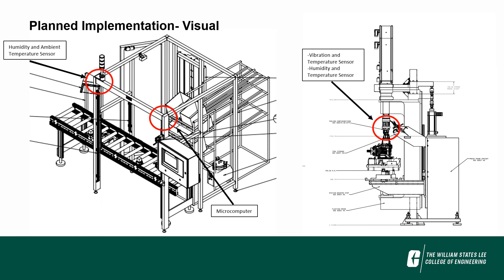To help visualize our implementation, we have attached two 3D models. The left model shows Station 190 and the right model shows the press. In the top left corner of the station, the humidity and ambient temperature sensor will be attached. On the right top corner of the station, the microcomputer will be attached using an arm structure. On the press, there will be another humidity and ambient temperature sensor, as well as a vibration and temperature sensor.